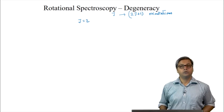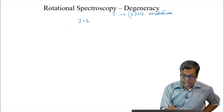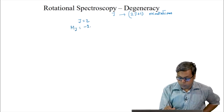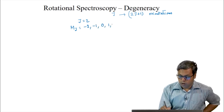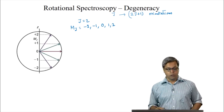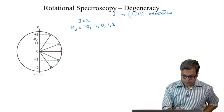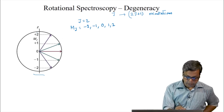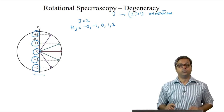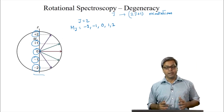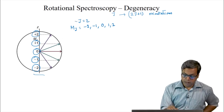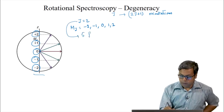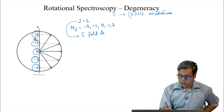For example, when j equals 2, we know mj equals minus 2, minus 1, 0, 1, and 2. So we can see in this figure that mj can take values of plus 2, plus 1, 0, minus 1, and minus 2. So we can say that j equals 2 is 5-fold degenerate.